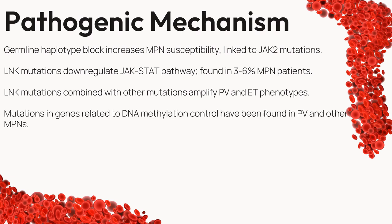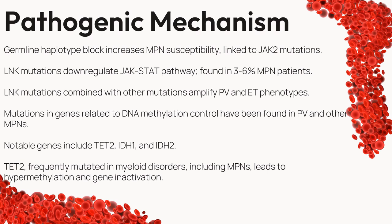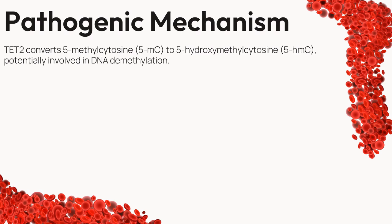Our narrative explores somatic mutations in genes responsible for DNA methylation control, a process that regulates gene expression. Notable genes in this landscape include TET2, IDH1, and IDH2, each holding keys to the delicate balance of genetic control. TET2, a frequent player in myeloid disorders including MPNs, showcases its role in DNA methylation — TET2 mutations lead to hypermethylation, a phenomenon where genes are inactivated. TET2's role becomes even more fascinating as it converts 5-methylcytosine (5-MC) to 5-hydroxymethylcytosine (5-HMC), potentially participating in DNA demethylation processes.